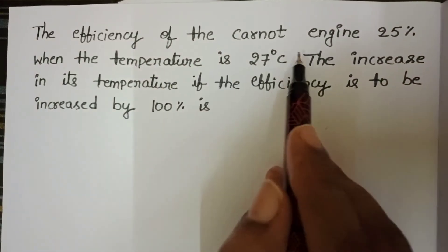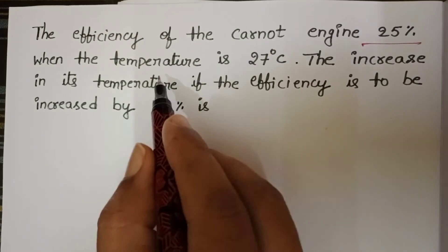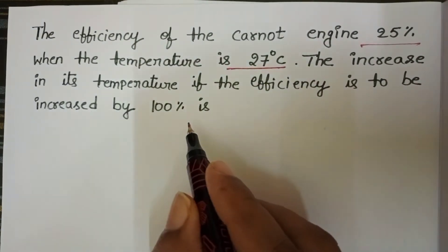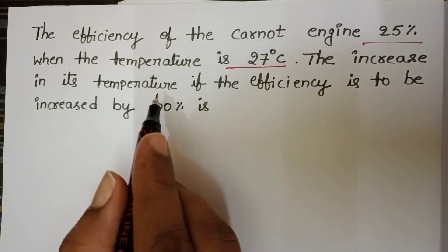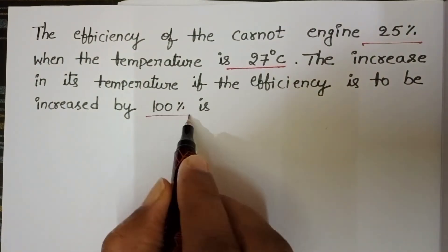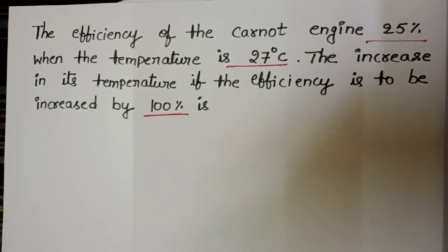The efficiency of the Carnot engine is 25% when temperature is 27 degree centigrade. The increase in its temperature if the efficiency is to be increased by 100%. This question is from Thermodynamics.